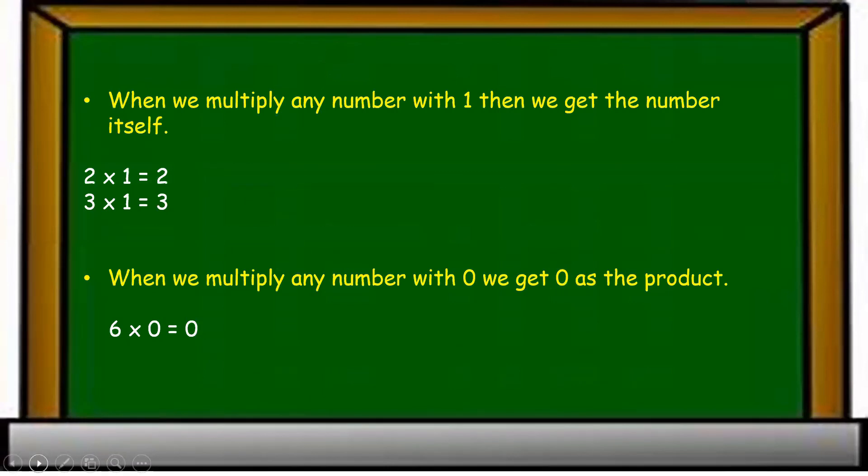The third rule says: when we multiply any number with zero, we get zero as the product. For example, six into zero is equal to zero.